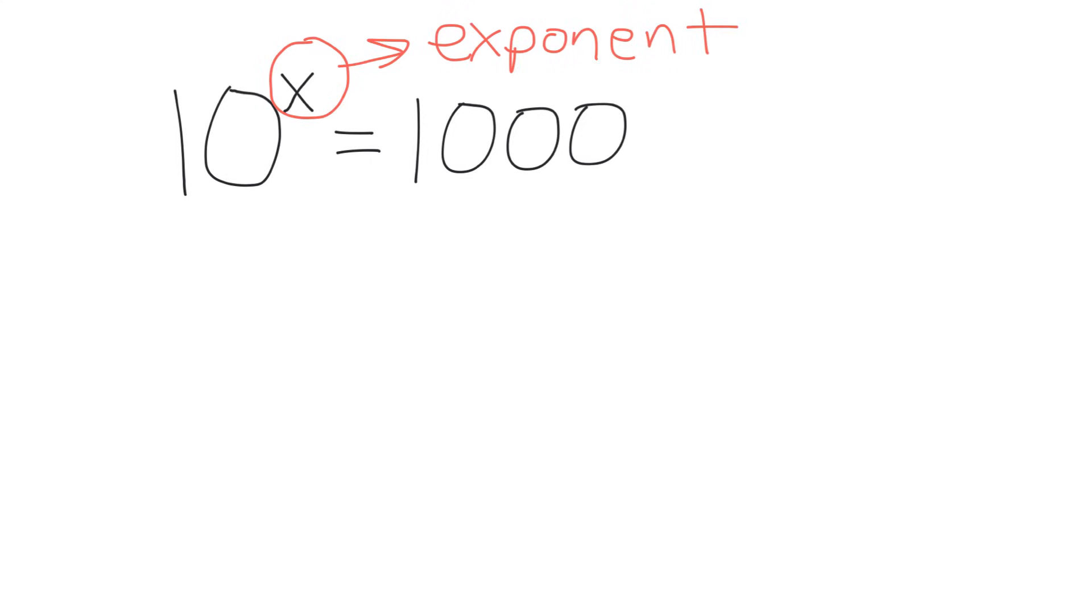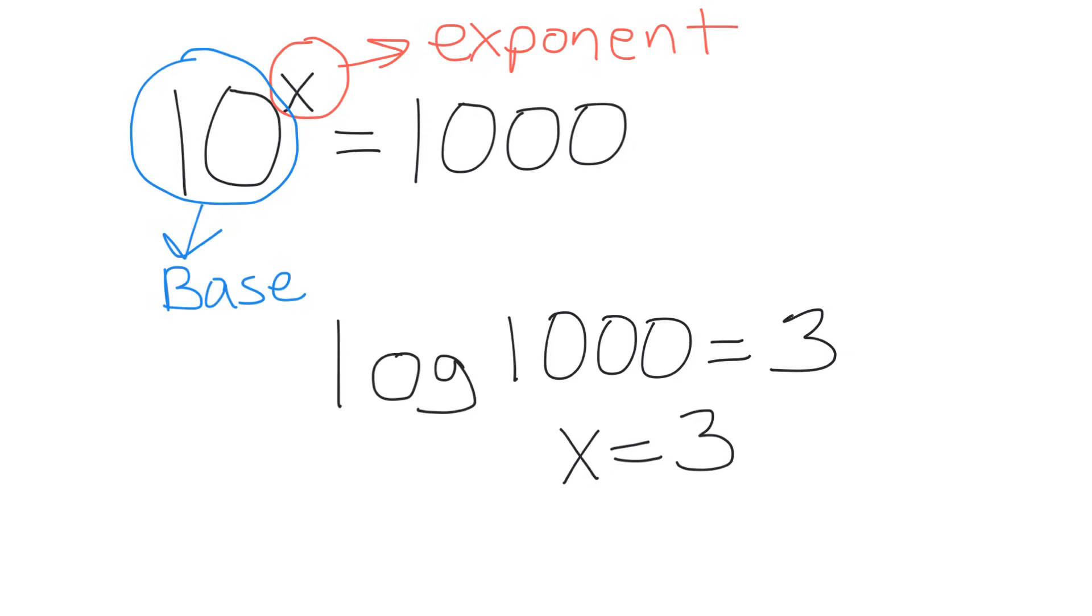For example, 10 to the x power equals 1000. This 10 is called the base. The way we write the above expression as a logarithm is log 1000, which is equal to 3, thus x equals 3 in the above expression. Why? Because 10 times 10 times 10 equals 1000.